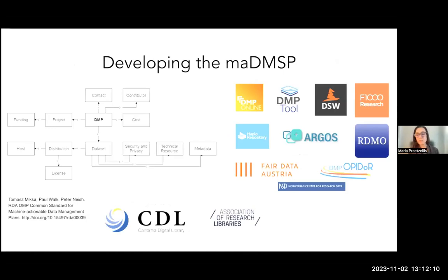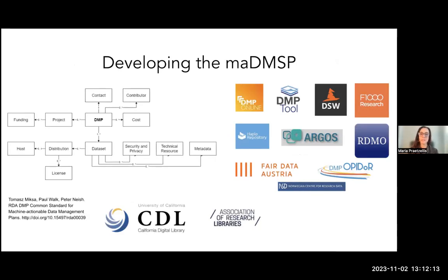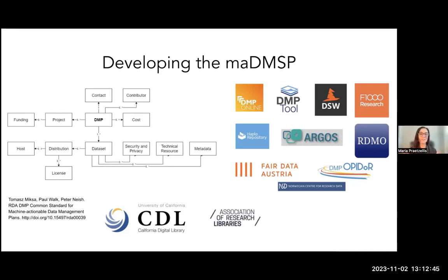The machine actionable plan work is very much an international effort — not something only within the California Digital Library. There are many other providers similar to DMP tool internationally that are also working with us in this space. We have worked together as a tool provider community to coalesce around standards for how we express plans in a structured manner. This is really important because it means we can all agree on how we should be structuring and expressing this information so we are truly interoperable with other systems.